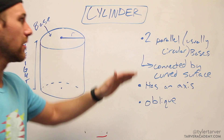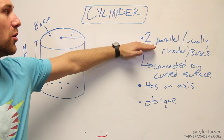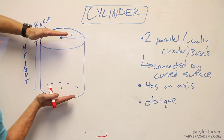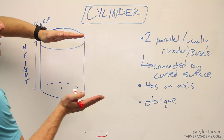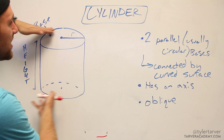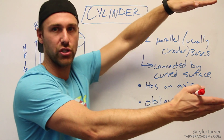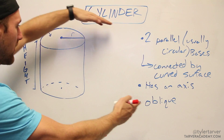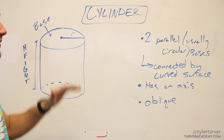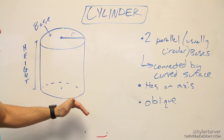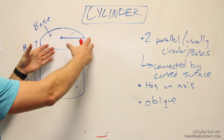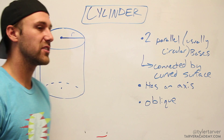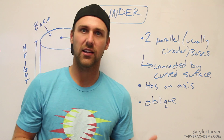You have two parallel, usually circular, bases. These have to be parallel, which means if you extended them forever they would never touch. Those are your bases — they're connected by a curved surface around them.